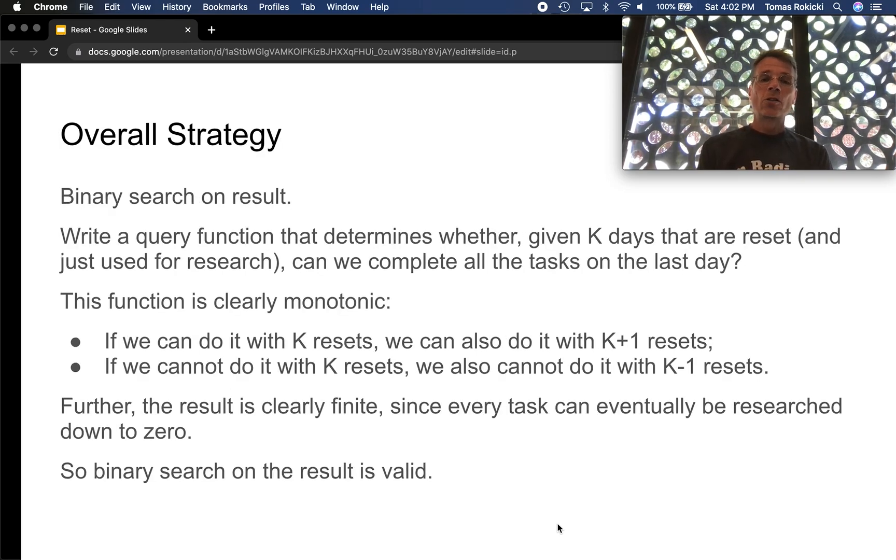Our overall strategy is going to be a binary search on the final result. And the way we do this is we write a query function that, given a number k, determines whether you can actually complete all the tasks using the first k days for research and then finish the remaining research and tasks in the last day. This function is clearly monotonic because if we can do it with k resets, we can do it with k+1 resets.